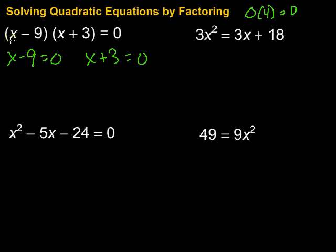To solve this, we want to get that x by itself. So we do the opposite to get rid of the minus 9, and we end up with x equals 9. Then over here, we want to get rid of that plus 3, so subtract 3, and we end up with x equals negative 3. So my solutions, in this case, are 9 and negative 3.